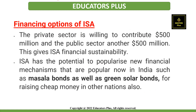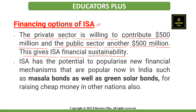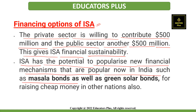Talking about the financing options of the International Solar Alliance, the private sector is willing to contribute $500 million and the public sector is also willing to contribute another $500 million, giving the ISA financial stability and sustainability. Furthermore, the International Solar Alliance has the potential to popularize new financial mechanisms popular in India, such as Masala bonds and green solar bonds, for raising cheap money.